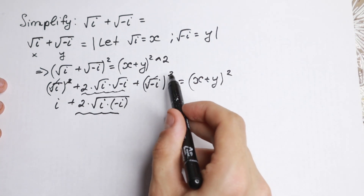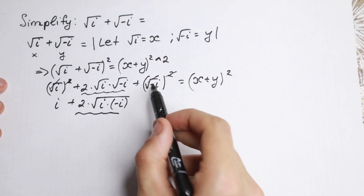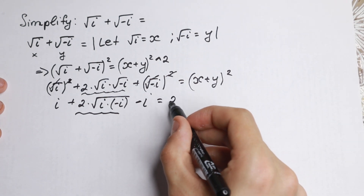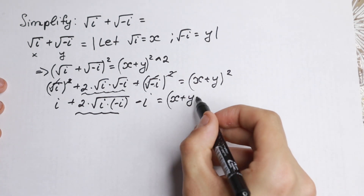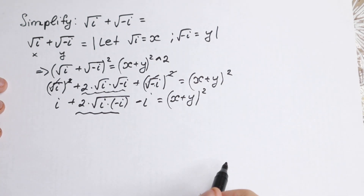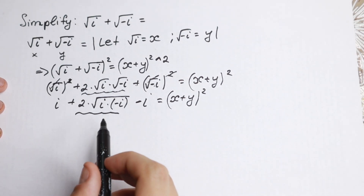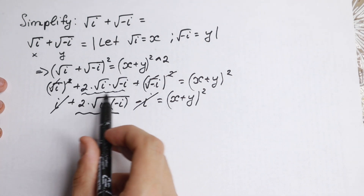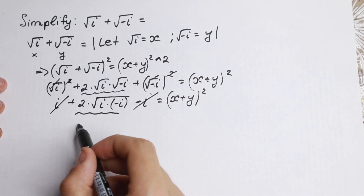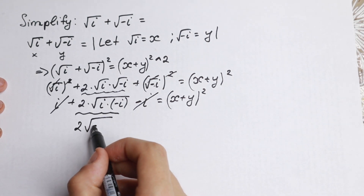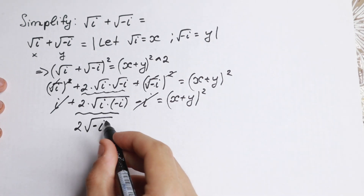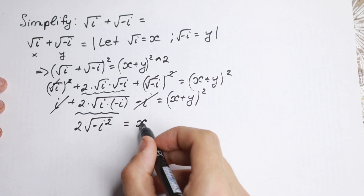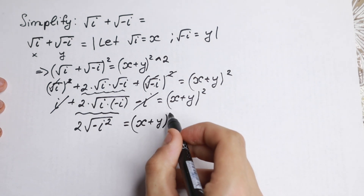So if we write this, we cancel the square: plus times minus will be minus, so we get plus two times square root of minus i squared, equal to (x + y) squared. And as you can see, i and i cancel. So we still have this element: 2 times square root of minus i squared, on the left, and (x + y) squared on the right.